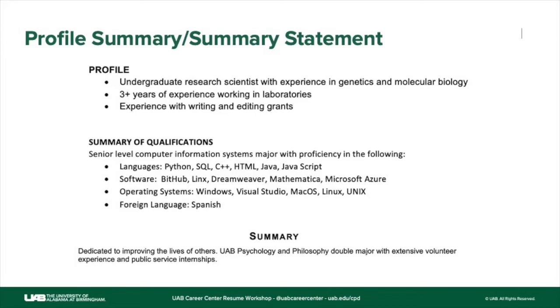The profile summary can answer that question perfectly. For example: I'm an undergraduate research scientist with experience in genetics and molecular biology; I have three-plus years of experience working in laboratories; I have experience writing and editing grants. You're talking about what you bring to the table — the best of your experiences. That's what should be in your profile summary. You can put it in paragraph form, but we recommend using bullets because they are psychologically easier to read. Either way is fine, but if you use a profile summary, make sure you're talking about what you bring to the table. Remember, it's an optional element and not required. Do not use a professional objective or objective statement.